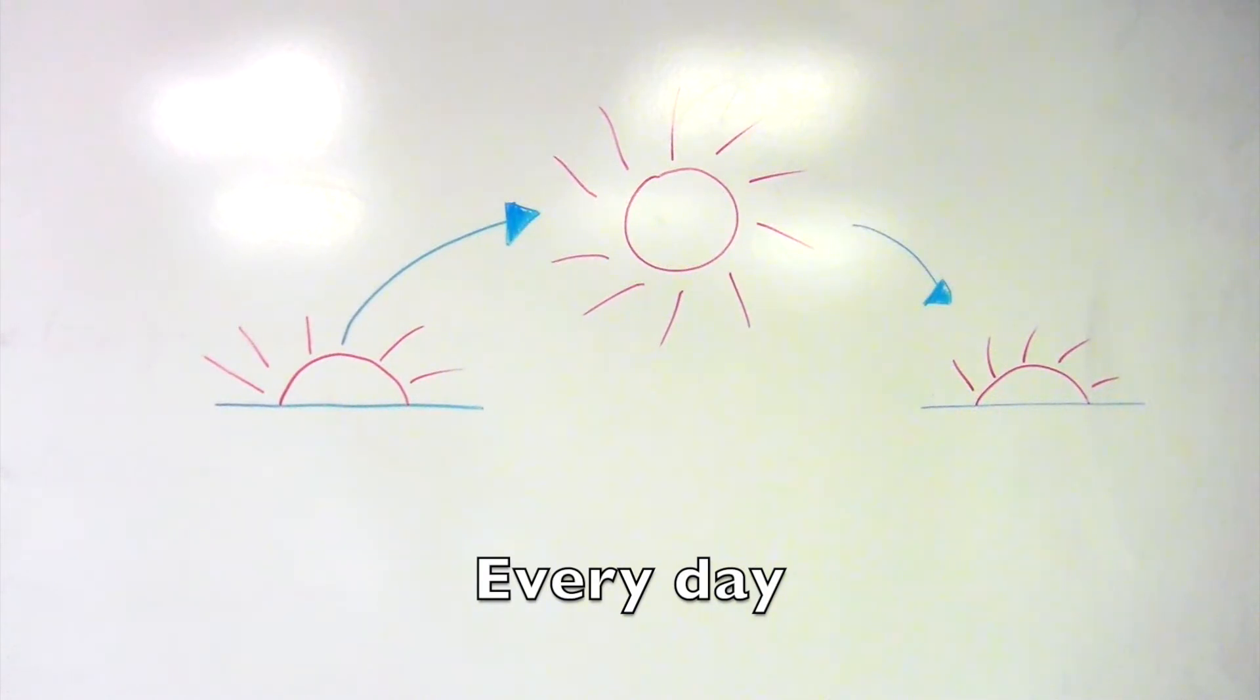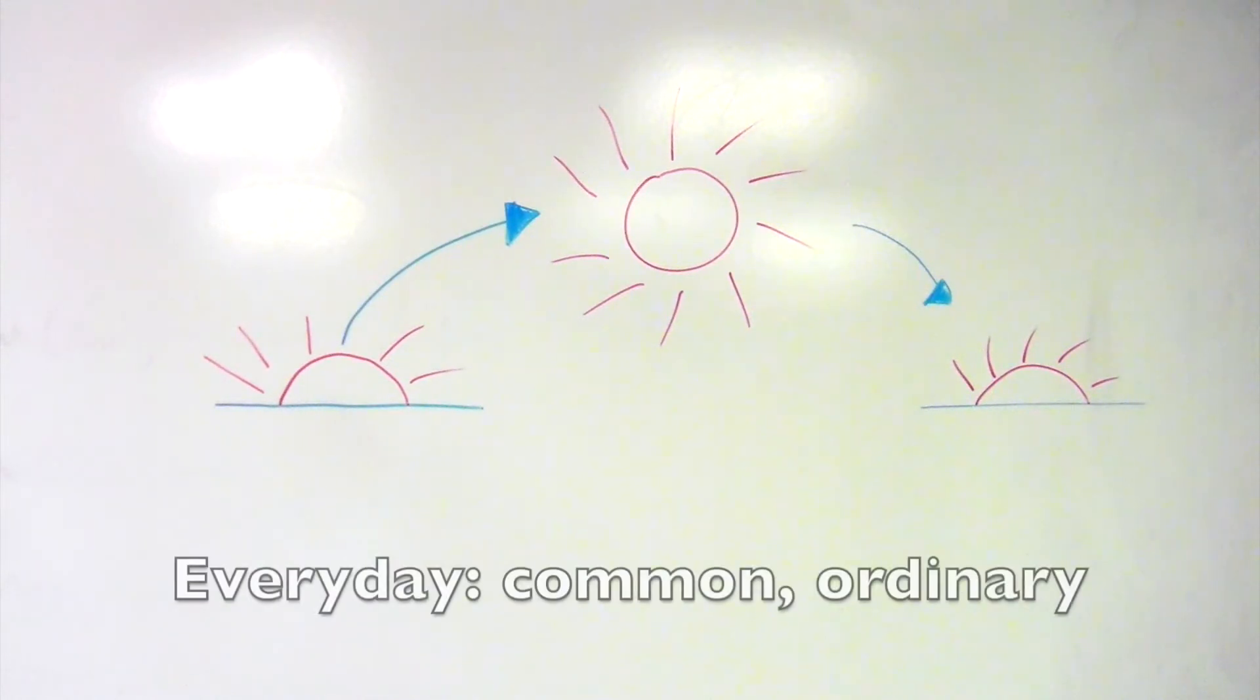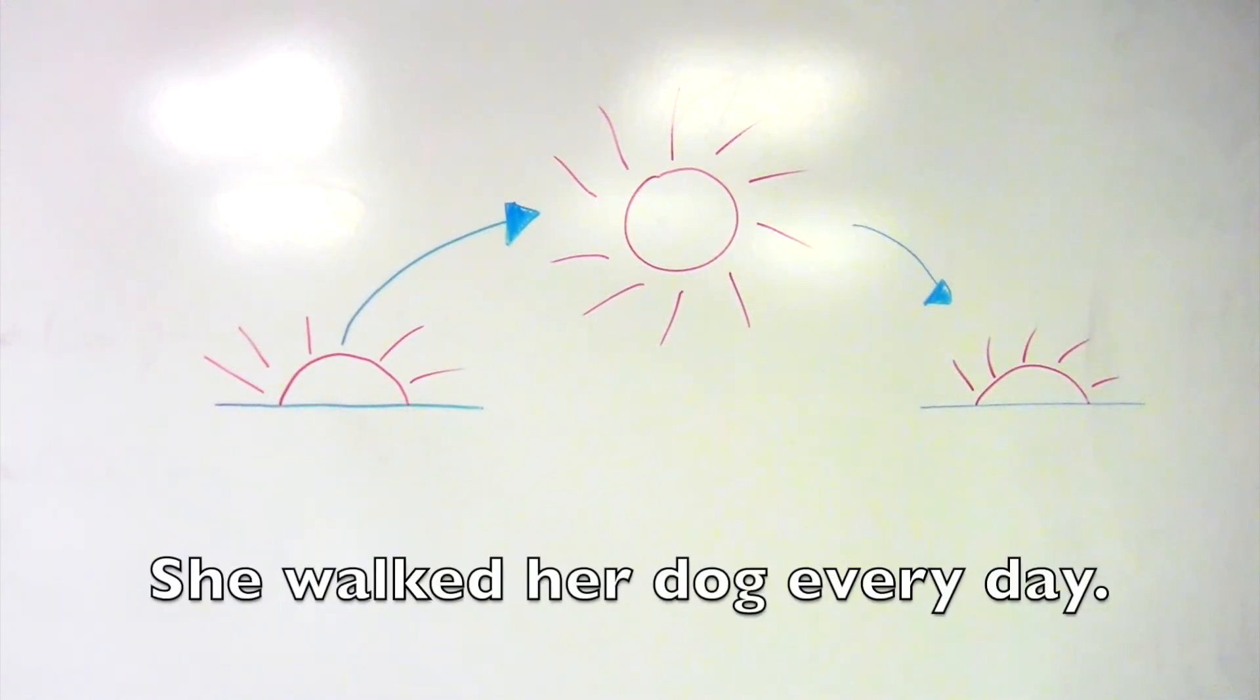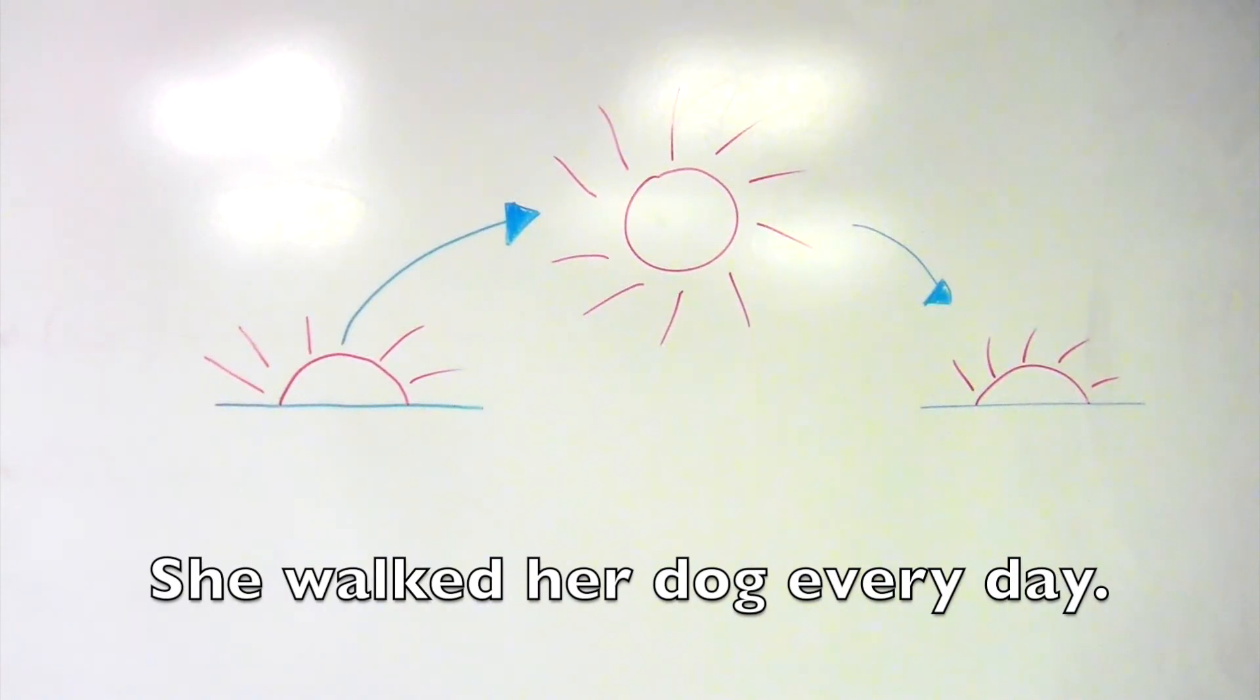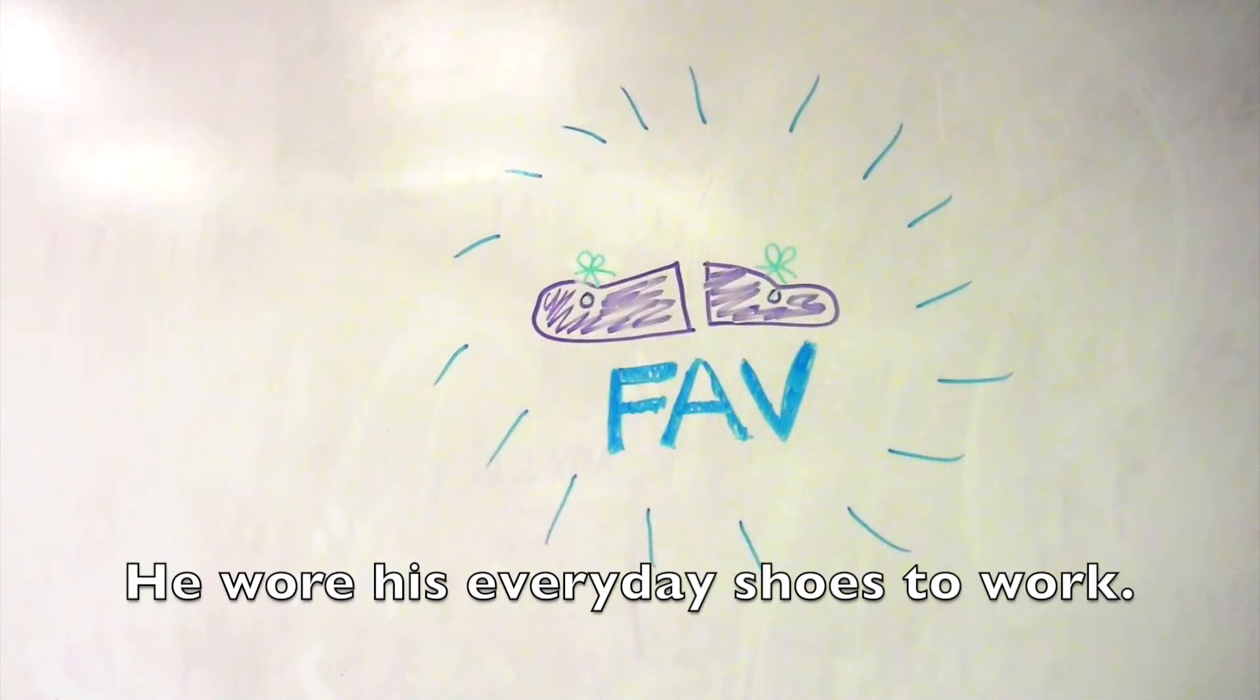Every day as two words is an adverb meaning each day, whereas everyday as one word is an adjective meaning common. For example, one could say, she walked her dog every day. Everyday as one word could be used to say, he wore his everyday shoes to work.